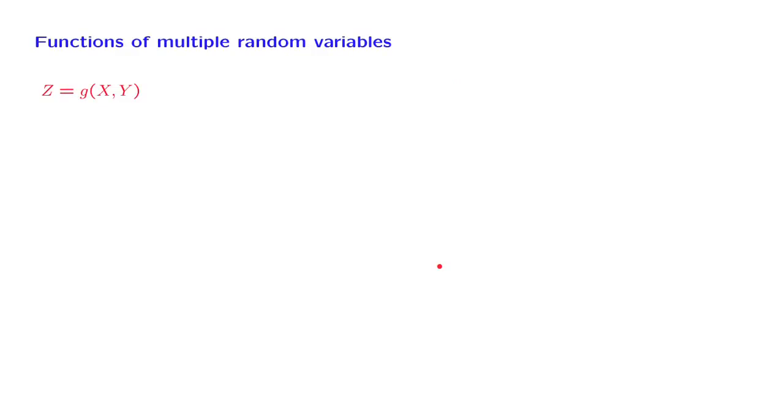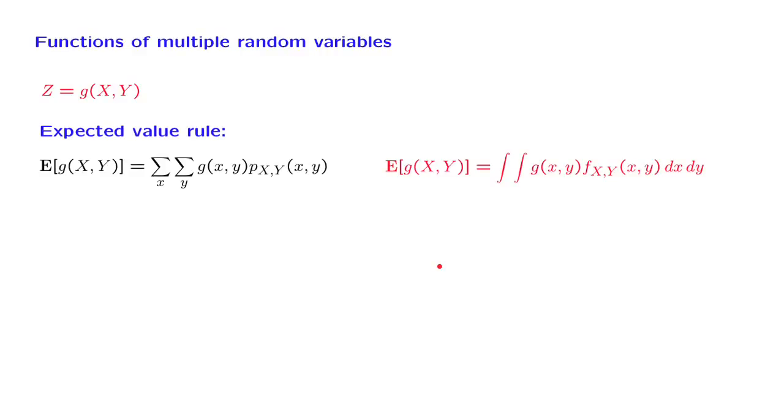Finally, when you deal with a random variable which is defined as a function of jointly continuous random variables, we can use an expected value rule that takes the same form as in the discrete case.